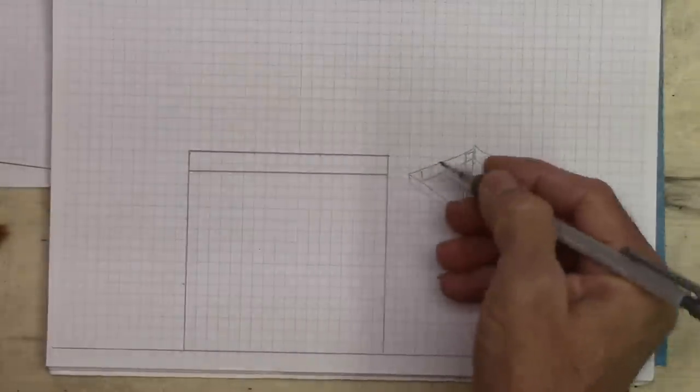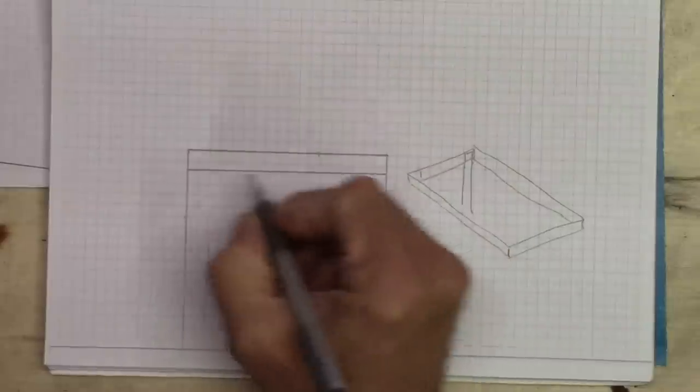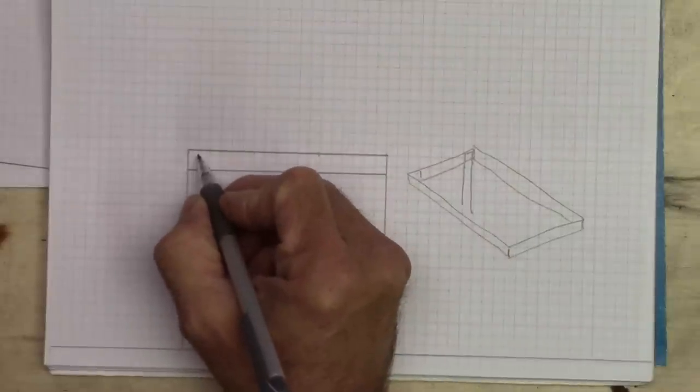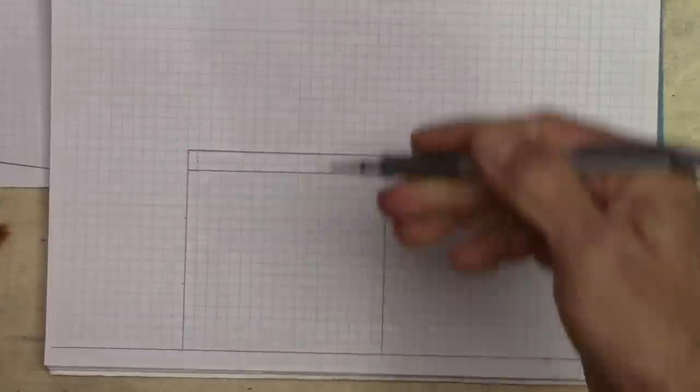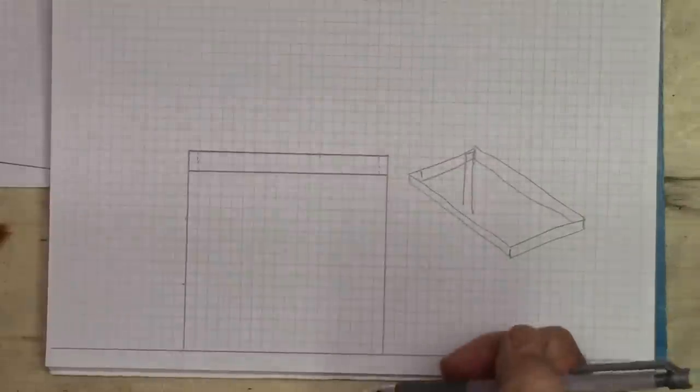And that would, this would be an end view mind you. So if we want to look at where the two by fours will butt into that. We'll just put a dotted line on the end. And that's a good indicator that you're looking at something on the other side of this.